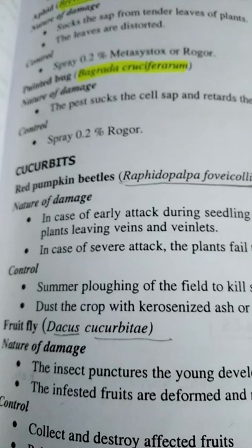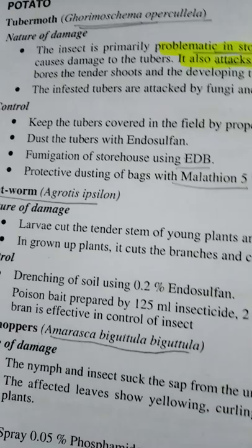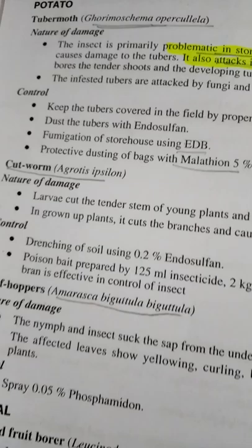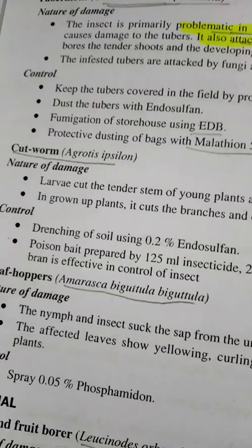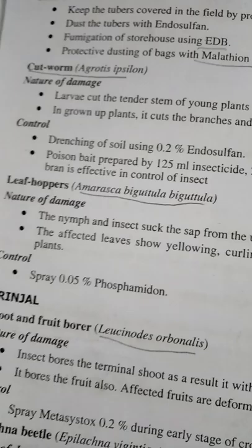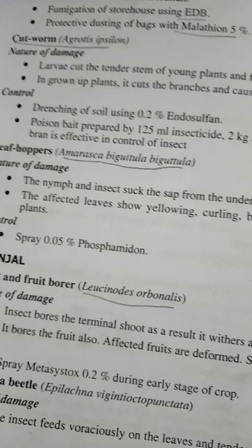Please remember some important pests: mustard sawfly is Athalia proxima, diamond black moth is Plutella xylostella, painted bug is Bagrada cruciferarum — these are pests of cole crops. For cucurbit pests: red pumpkin beetle is Raphidopalpa foveicollis, fruit fly is Dacus cucurbitae. Potato tuber moth is Phthorimaea operculella. Cutworm is Agrotis epsilon. Leaf hopper is Amrasca biguttula biguttula.